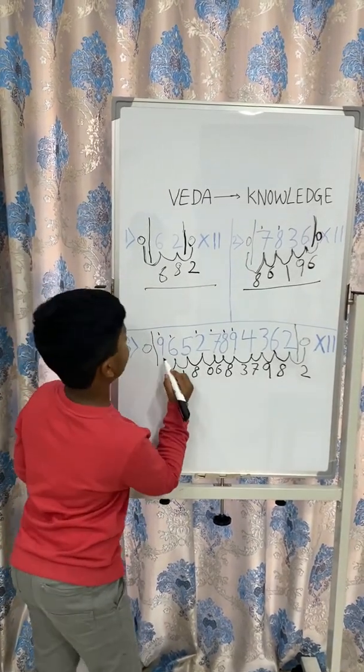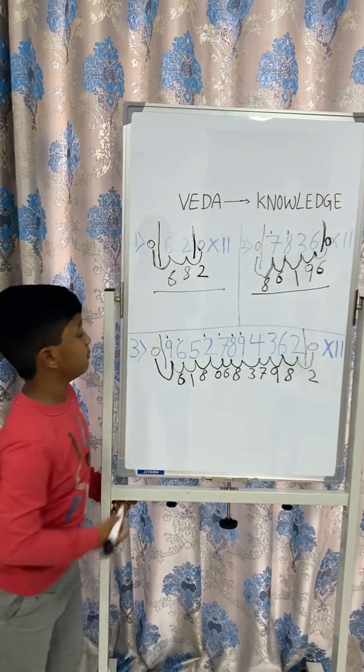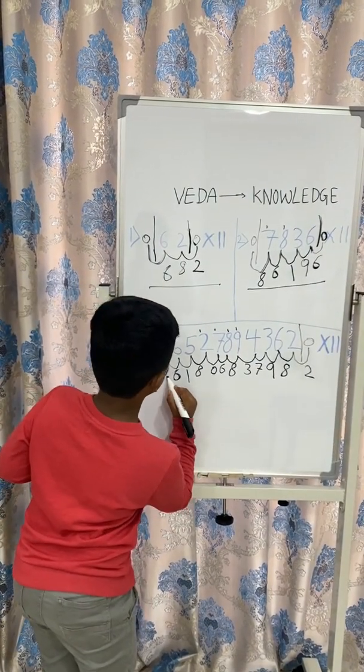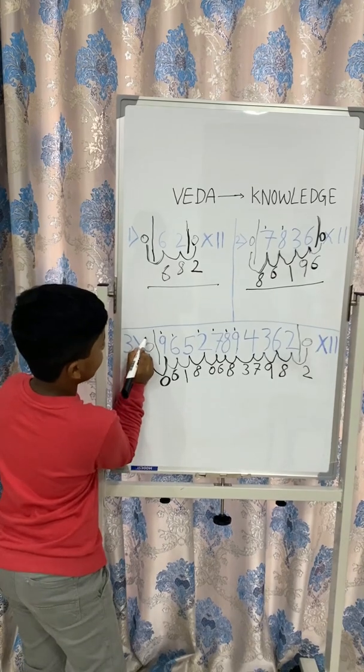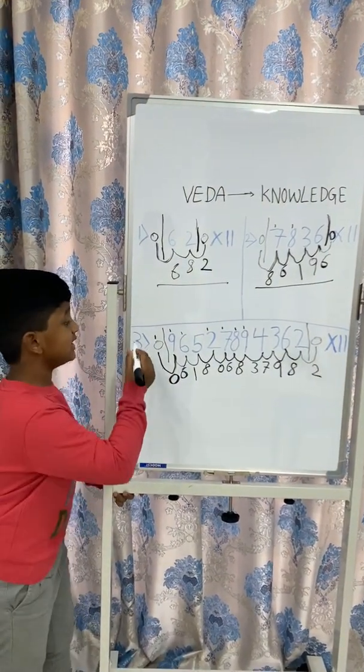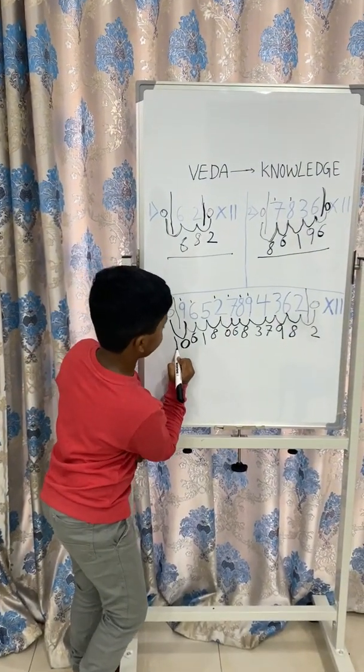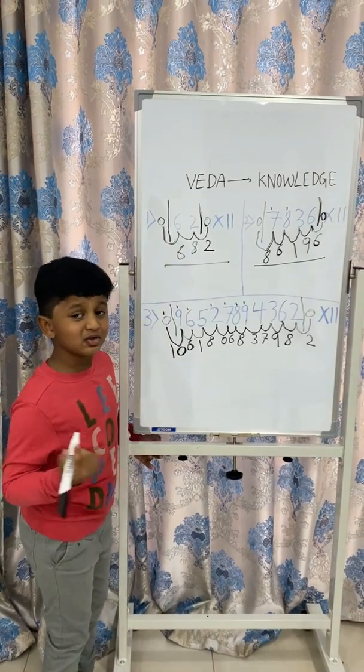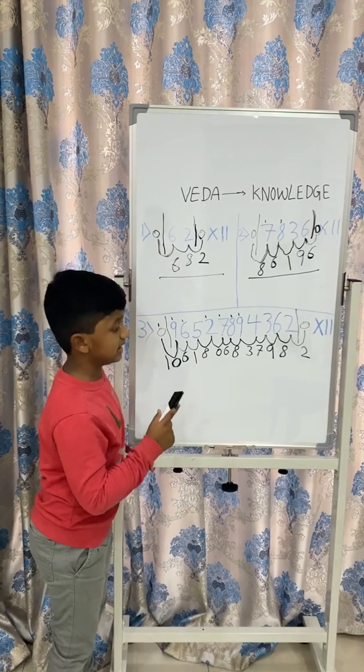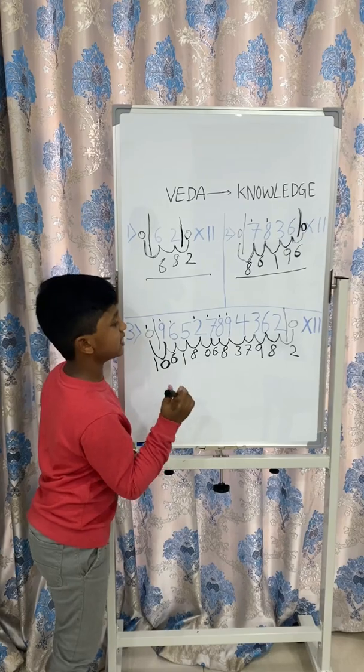Then we add 9 plus 0 which makes it 9 plus the carried 1 makes it 10. So, we write 0 and carry the 1. The remaining digit is 0 plus the carried 1 makes it 1. So, we write 1. See, it is so simple. So, our answer is 1061806837982.